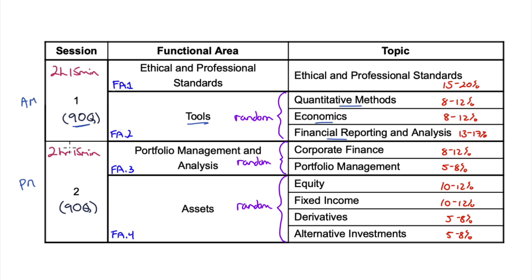Here is the number of questions per exam. The AM version has 90 questions, 2 hours 15 minutes — same with the PM, 90 questions, 2 hours 15 minutes. For the PM you have two functional areas as well. Functional area three is portfolio management and analysis, and functional area four is the asset classes: equity, fixed income, derivatives, and alternative investments.